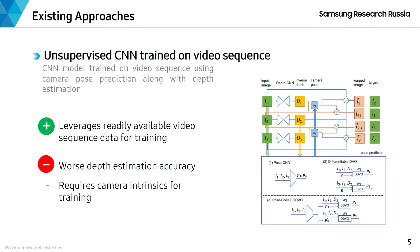Another approach is unsupervised CNN trained on video sequences. In this approach, a CNN model is trained on video sequences using camera pose prediction along with depth estimation. The strong point of such an approach is that it leverages readily available and abundant video sequence data for training. However, the depth estimation accuracy achieved by this approach is typically inferior, and it also requires camera intrinsics for training, which are not always readily available.